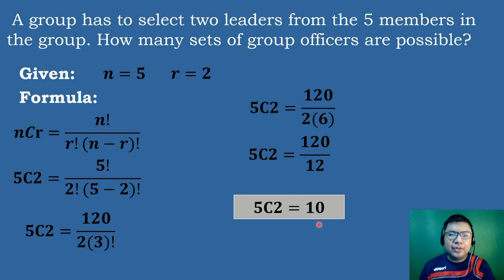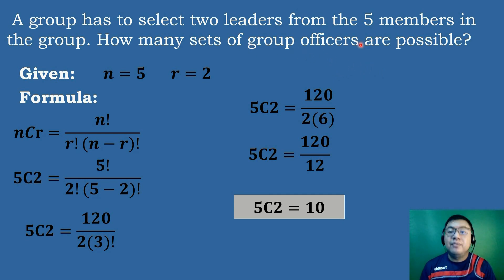Therefore, there are 10 sets of group officers possible when selecting 2 leaders from the 5 members in the group.